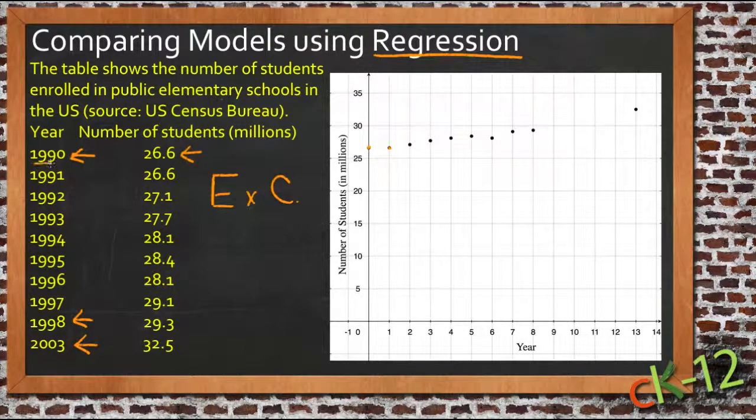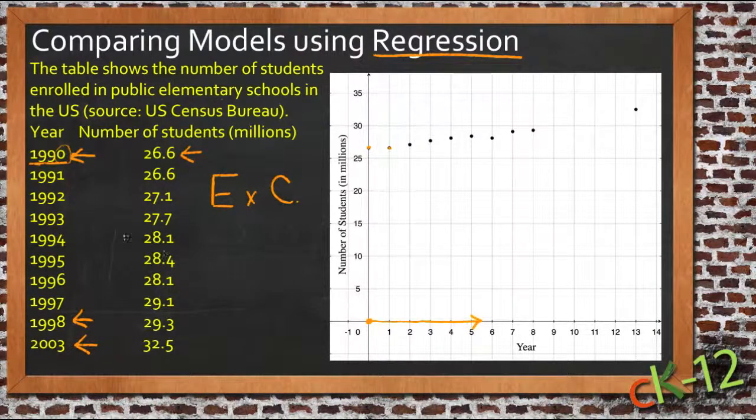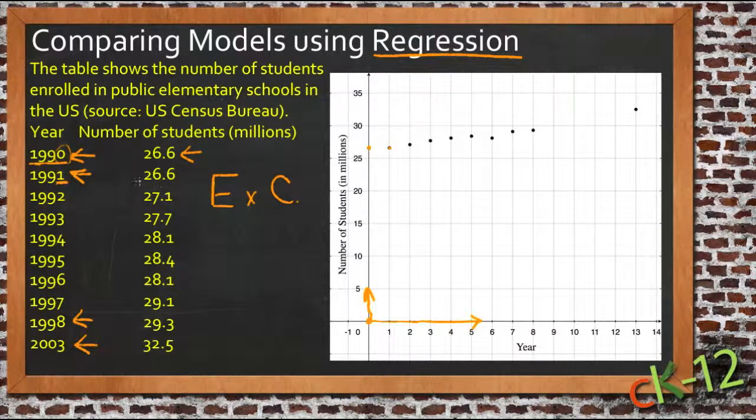What they've done is taken those data points. 1990 they assumed was year 0, so basically just using the last digit here, and set that as year 0 on a graph, and then increased years going off to the right along the x-axis, and started plotting millions going up on the y-axis. So in 1990, where there was 26.6 million, we have a point at 0 and 26.6. Then the next year, 1991, was x equals 1, and y equals 26.6 again, so we have two points side by side, and so on.